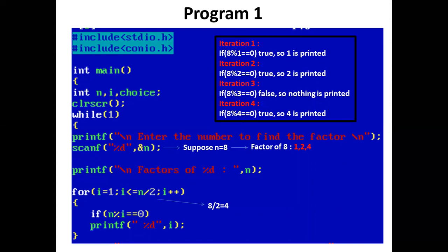Now i is incremented by 1. 2 plus 1 is 3. The condition is checked in the for loop: 3 is less than or equal to 4, true. So control again enters the for loop. Now if 8 mod 3 equals 0, false. So control comes out of the if block.